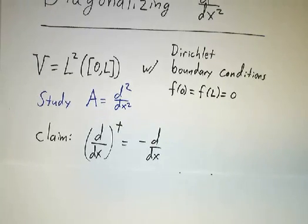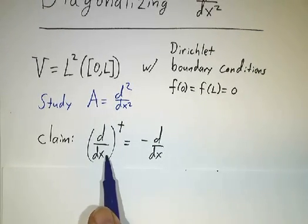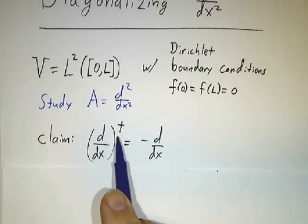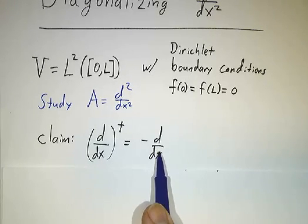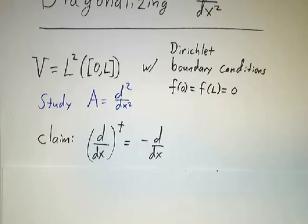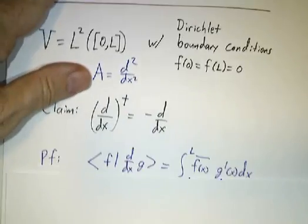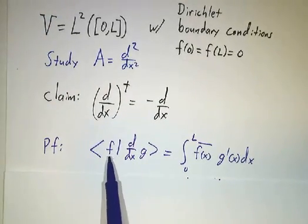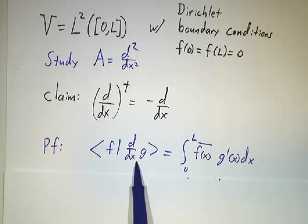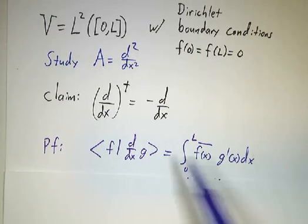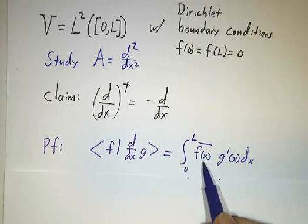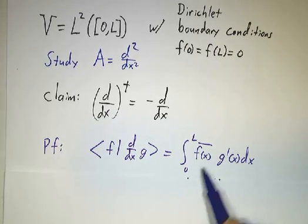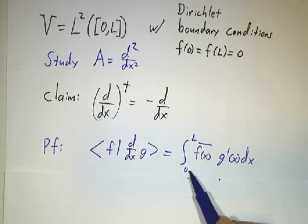The first thing to notice is that the first derivative operator is anti-Hermitian — the adjoint of the first derivative is minus the first derivative. To see that, we look at what happens when we take the inner product of f with the derivative of g. By definition, that's the integral of f-bar times g-prime dx, and we can do that integral by parts.